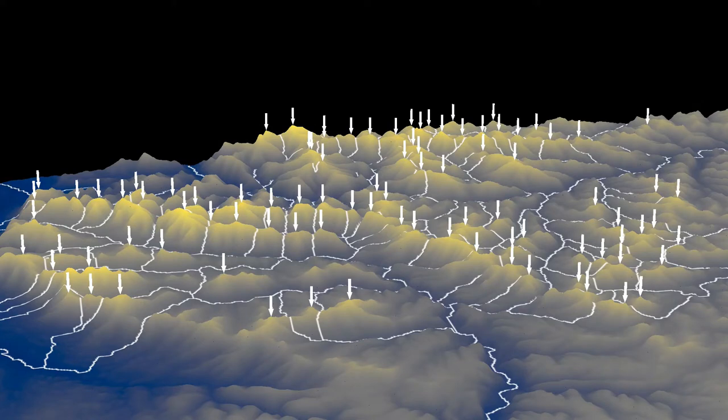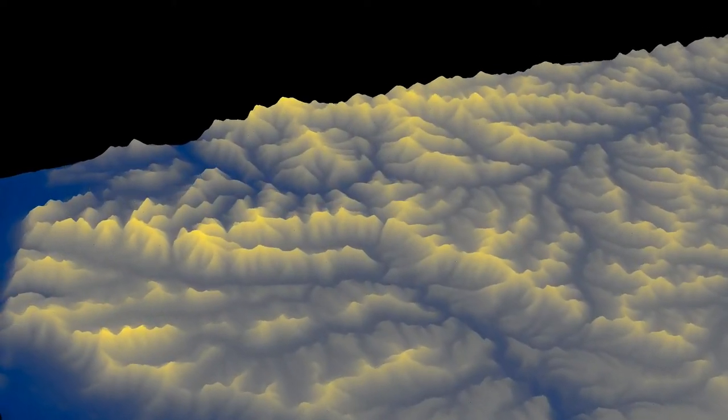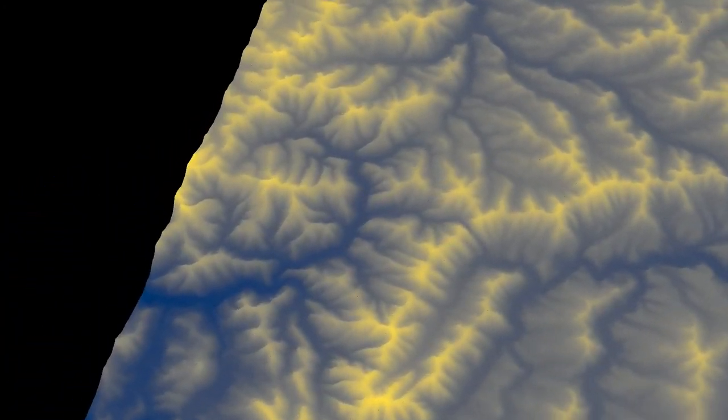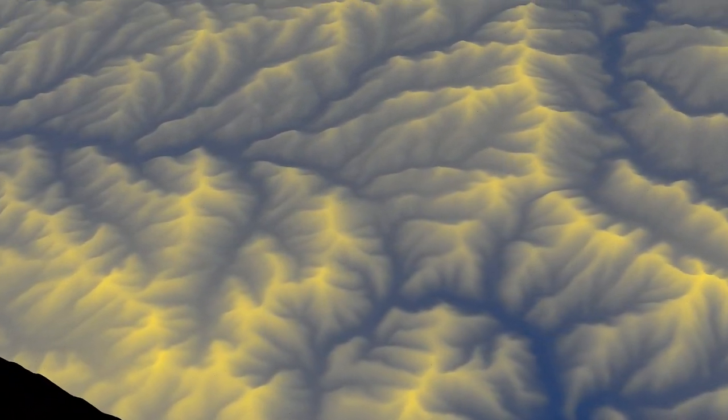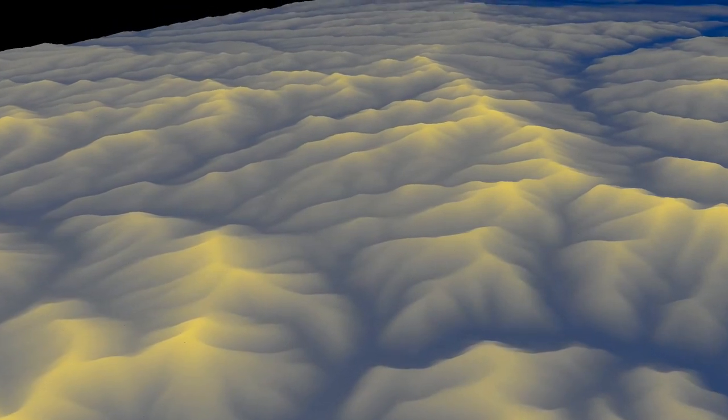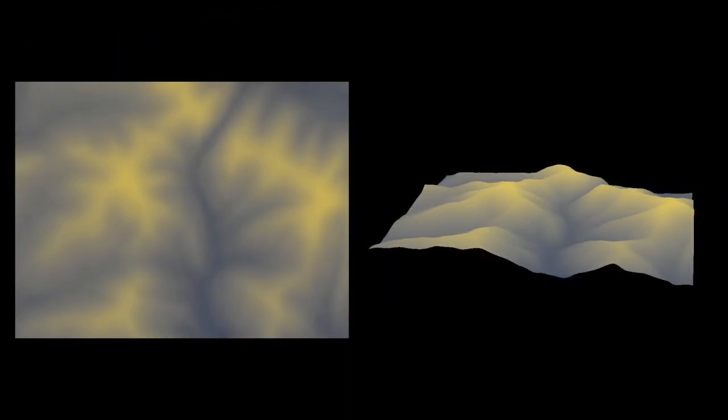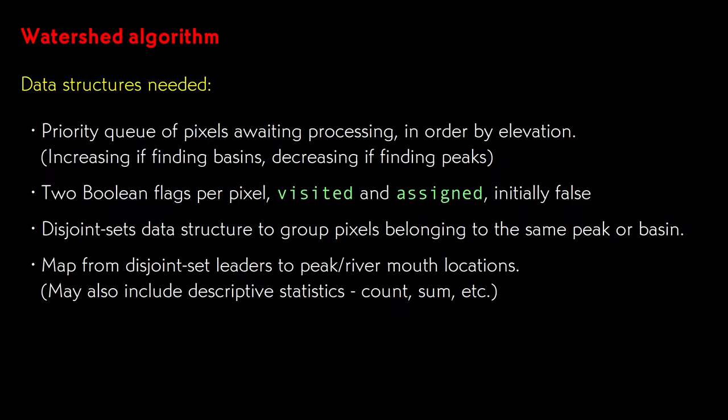That's basically all there is for the general concept, but we should probably take a look at more of the details of the algorithm. Once again, let me fly around to a tighter view, and focus in tightly on a small piece of the mountain range, along with a flat map of the same little area. From this view, let's look at the details of the algorithm. We'll need a few relatively simple data structures. We need a priority queue of pixels that are waiting to be processed, in order by elevation, increasing if we're flooding and decreasing if we're draining. We need a couple of Boolean values per pixel to keep track of state. And we need a disjoint sets data structure, which I described in an earlier video, that will group pixels according to which mountain owns them. For each mountain, we will need to track the location of the peak, and may want to keep some descriptive statistics.